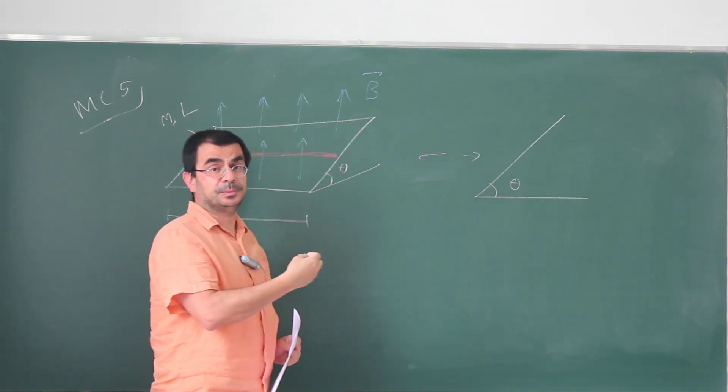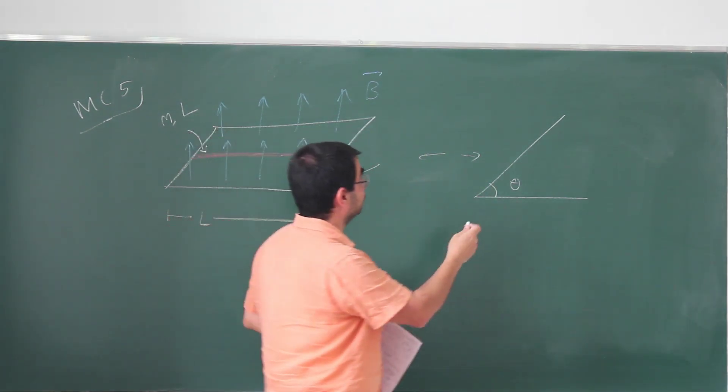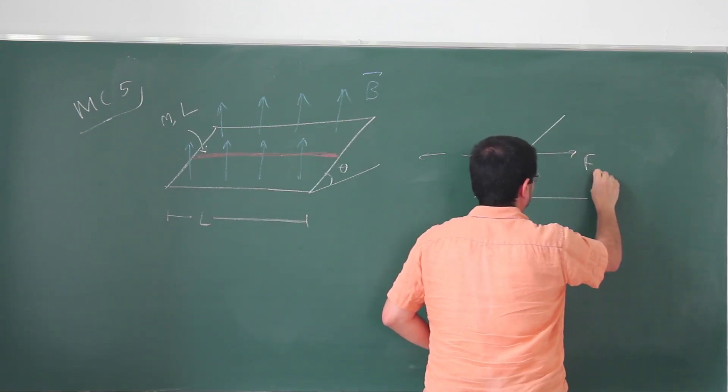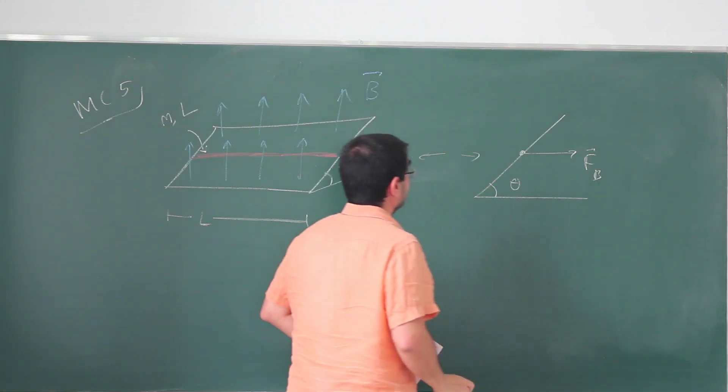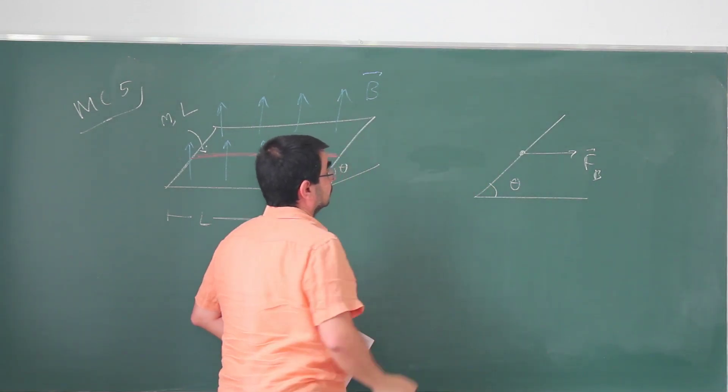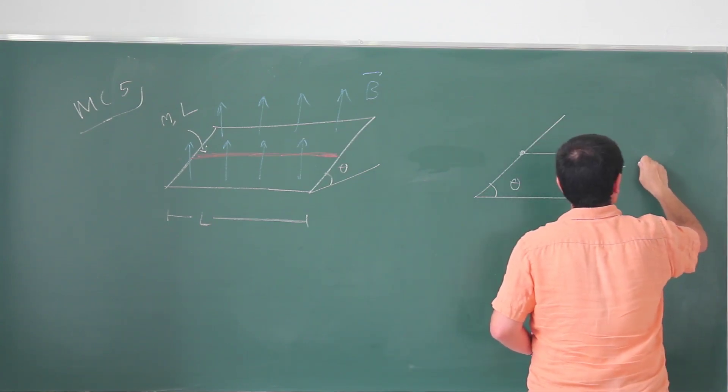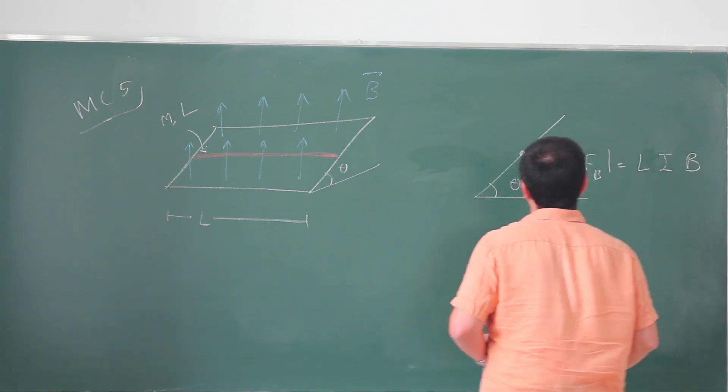Of course, if it's this way, it's not going to prevent it from falling down. The force is going to be, if this is my wire, the magnetic force is going to be this way. And the magnitude of this force is going to be L, capital L, I times B.